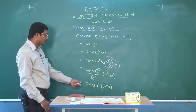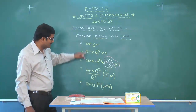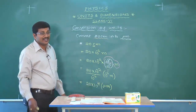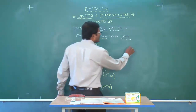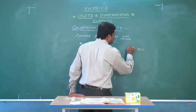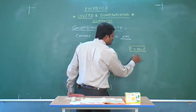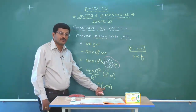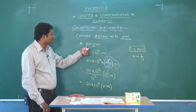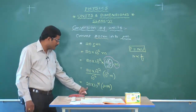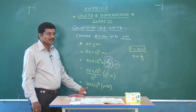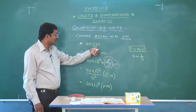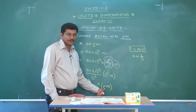This 10 to the power of minus 6 is converted to micrometers. So 20 centimeters converted into micrometers is 20 times 10 to the power of 4 micrometers. Using the rule P = NU, the numerical value is inversely proportional to U. Compared to centimeter, micrometer is a smaller unit, so the numerical value is larger — 20 versus 20 times 10 to the power of 4.